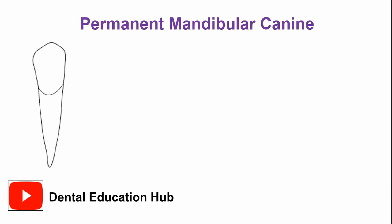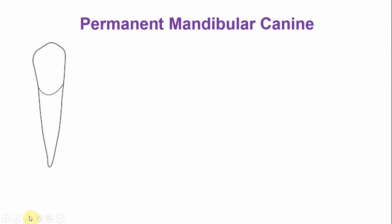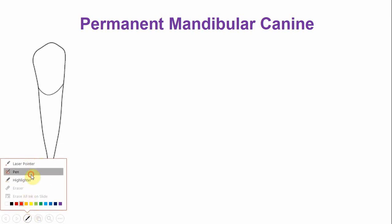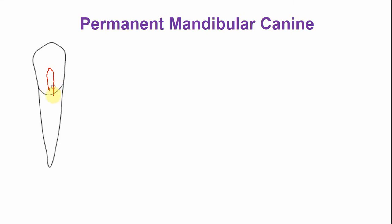This is the mesiodistal outline of the permanent mandibular canine. The pulp chamber and root canal are similar to that of the maxillary canine, but as the tooth is smaller in size, the pulp chamber and canal dimensions are smaller mesiodistally as well as labiolingually. A single prominent pulp horn is present. The mesiodistal dimension of the pulp chamber is smaller, and there is a gradual taper of the canal towards the root apex.